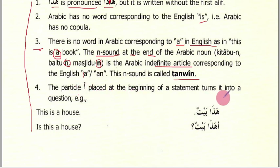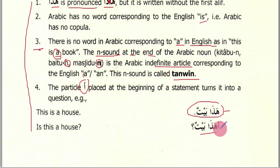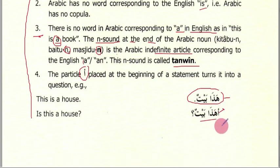The tanween corresponds to the English 'a' or 'an'. The hamza with a fatha placed at the beginning of a statement turns it into a question. For example, 'hadha baytun' means 'this is a house', but placing the hamza before it gives 'ahadha baytun?' — 'is this a house?' So this hamza is used for turning a sentence into a question.